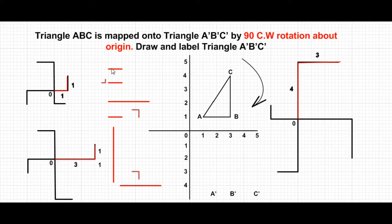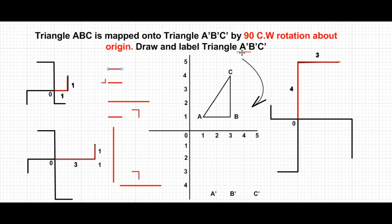To understand rotation, we solve an example: triangle ABC is mapped onto triangle A'B'C' by a 90 degree clockwise rotation about the origin. Draw and label triangle A'B'C'. The center of rotation is the origin, 0,0, and the triangle is rotated in the clockwise direction. To solve rotation problems, we take the help of a plus sign.